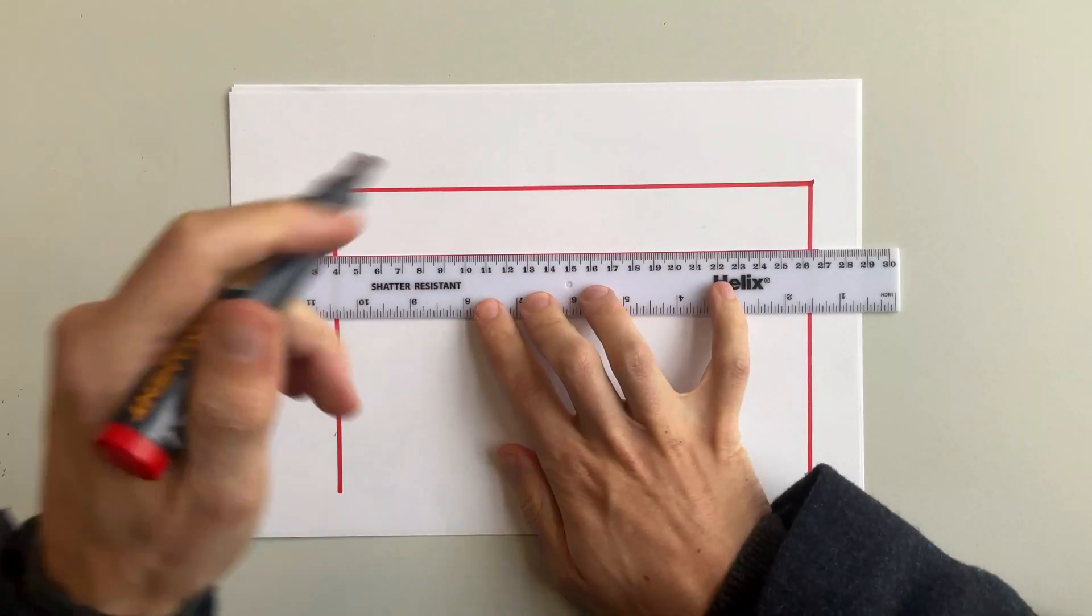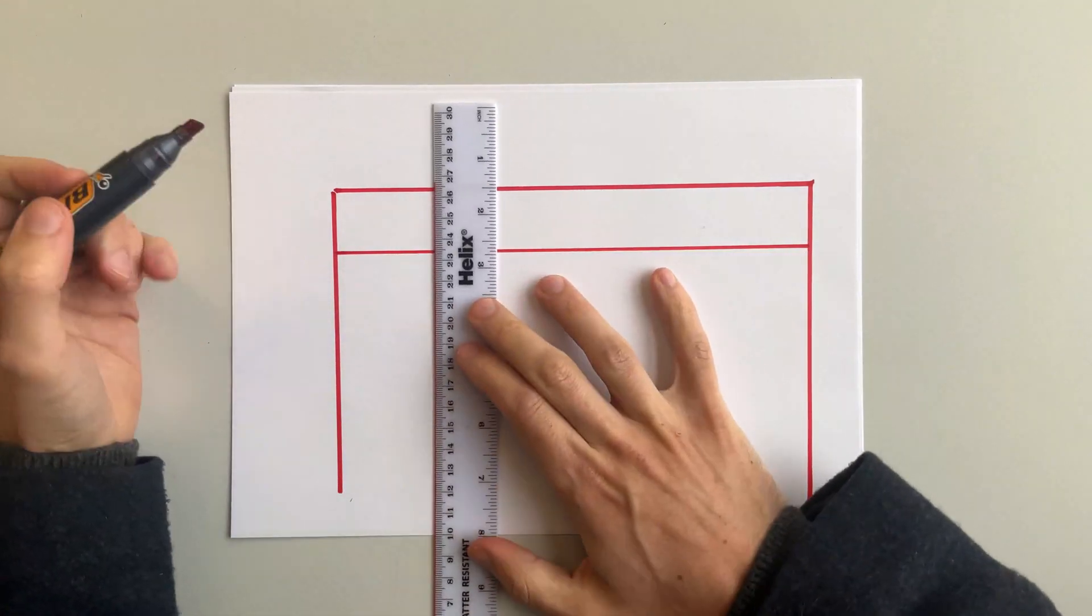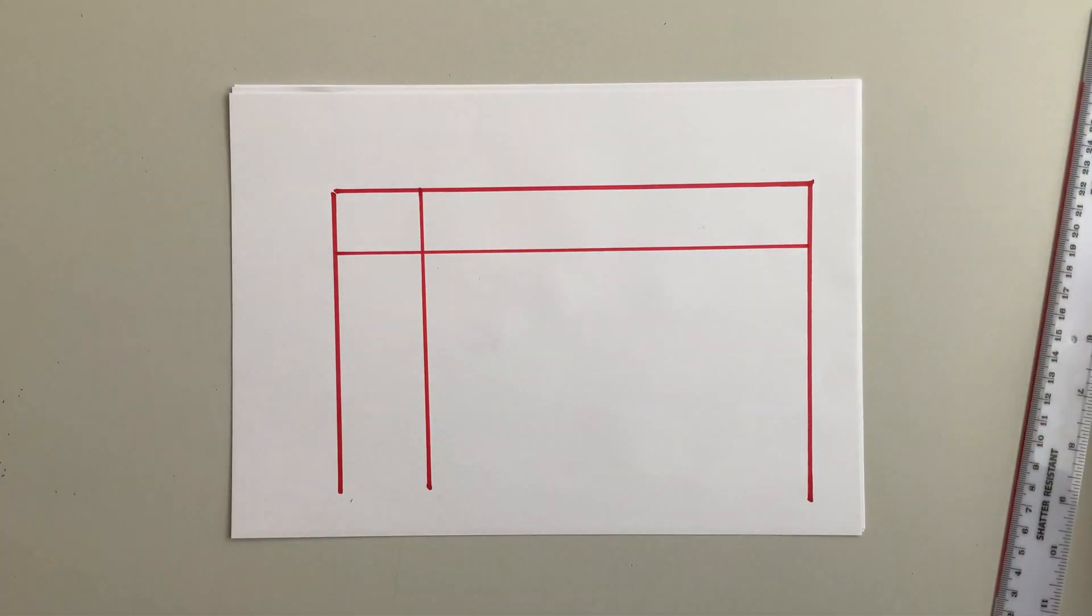Now you need to do a line across the top. This is for your titles and your units. Next we're going to start putting in our columns.